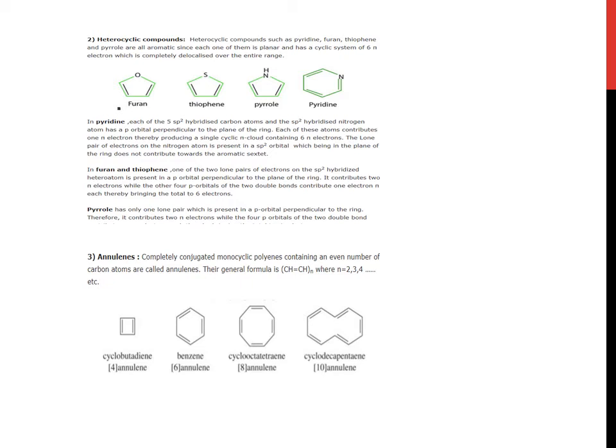In pyridine, each of the 5 sp2 hybridized carbon atoms and the sp2 hybridized nitrogen atom has a p orbital perpendicular to the plane of the ring. Each of these atoms contributes 1 pi electron, thereby producing a single cyclic pi cloud containing 6 pi electrons. The lone pair of electrons on the nitrogen atom is present in sp2 orbital, which being in the plane of ring, does not contribute towards the aromatic sextet.